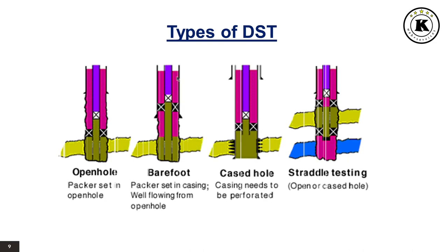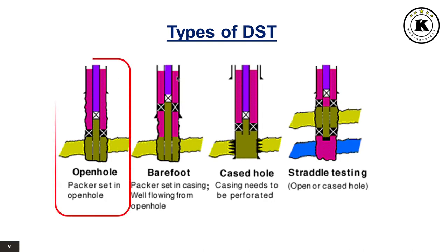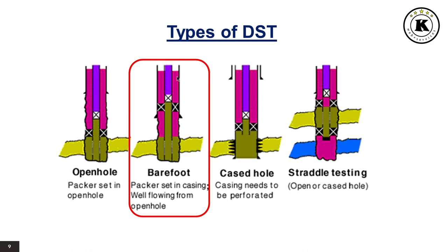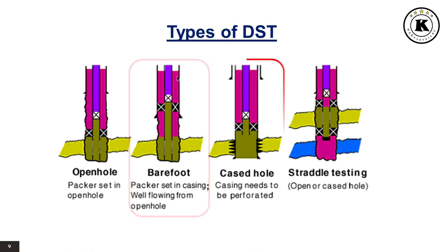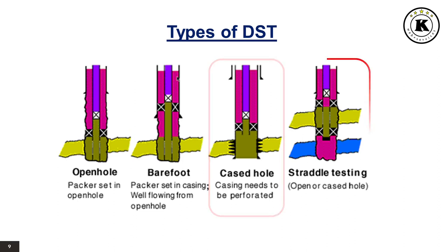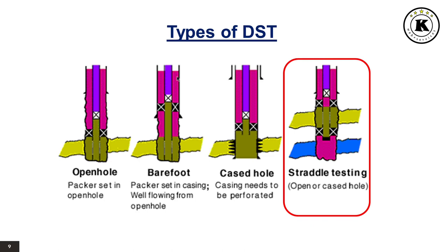There are three main types of DST available: Open hole DST, where the packer is set in the open hole section of the well; Barefoot DST, where the packer is set in the casing section but the well is flowing from open hole; Cased hole DST, where casing needs to be perforated in order to flow the well; and very rarely, Straddle DST, used in open or cased hole.